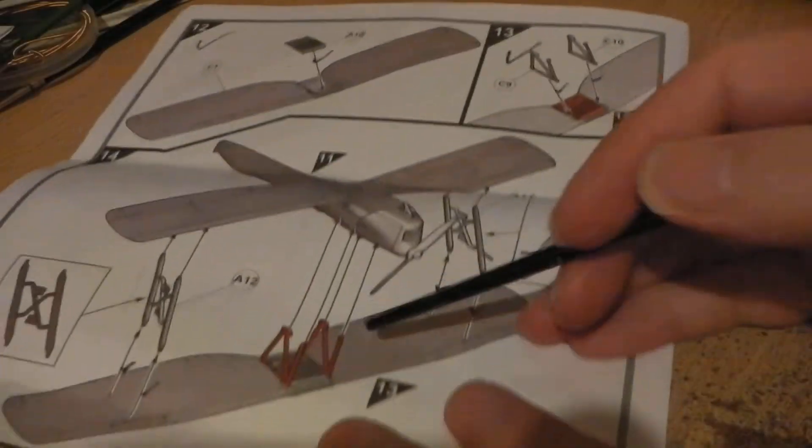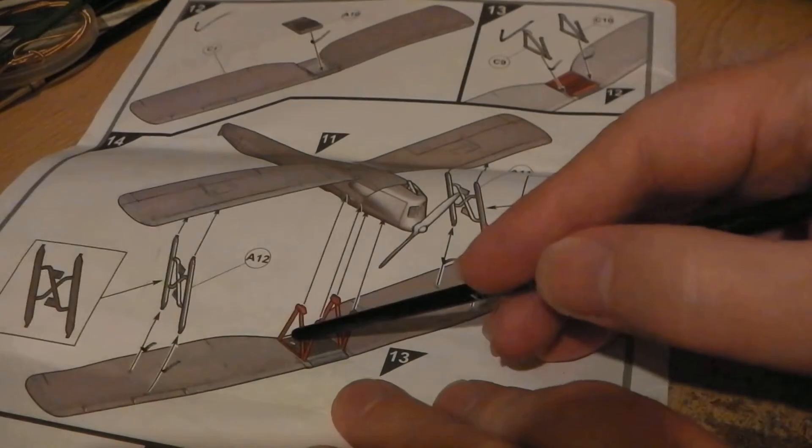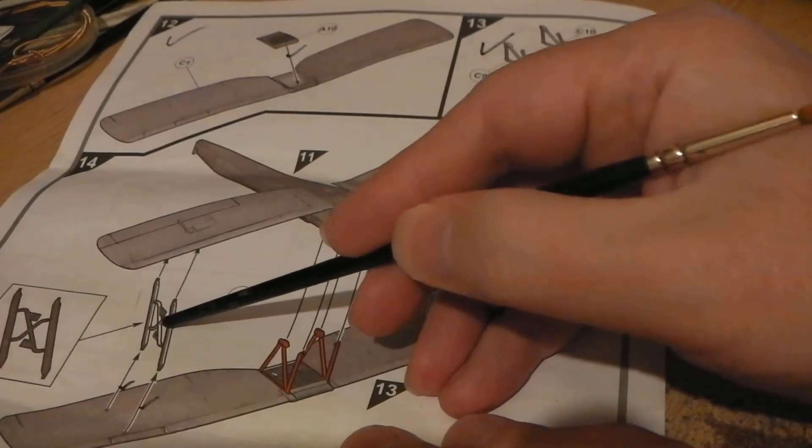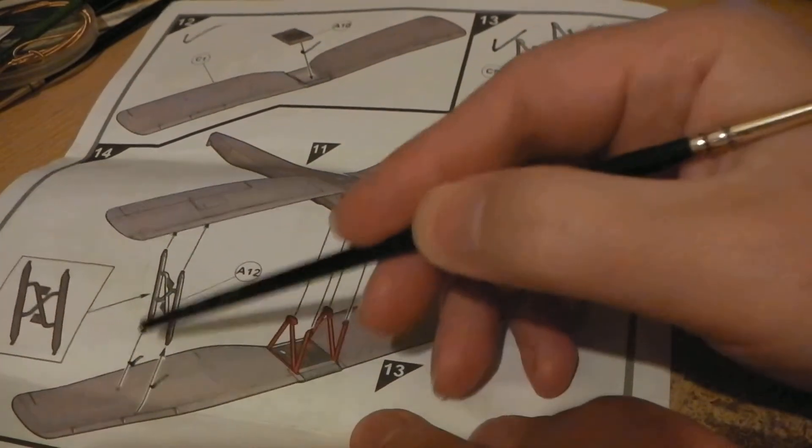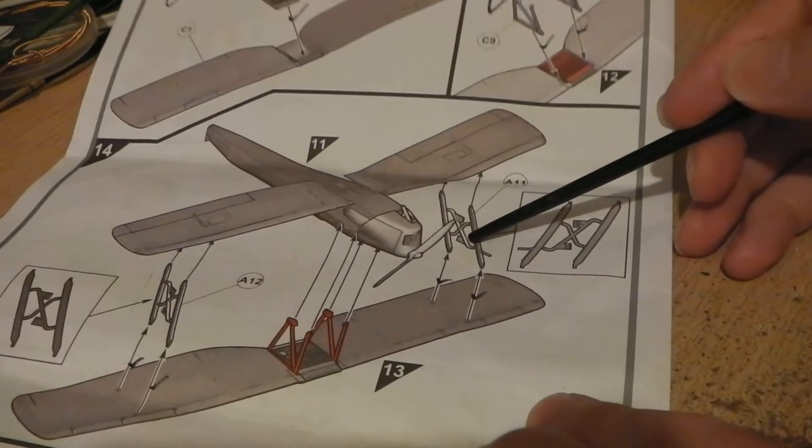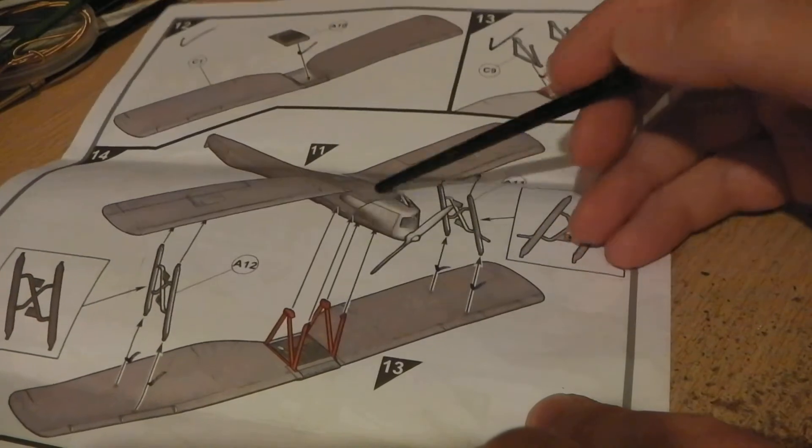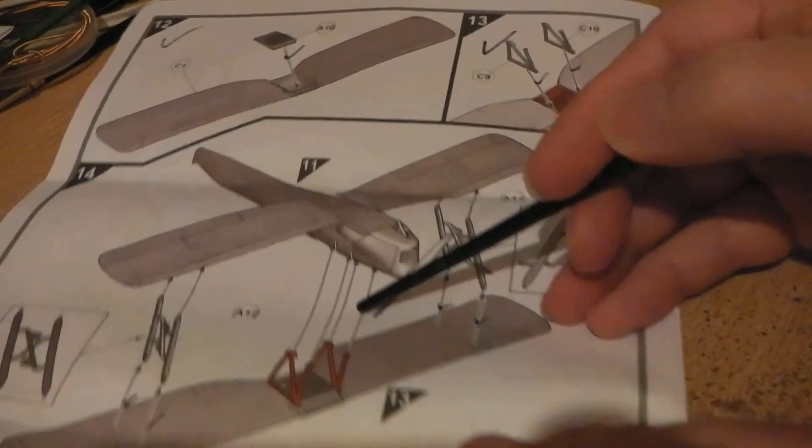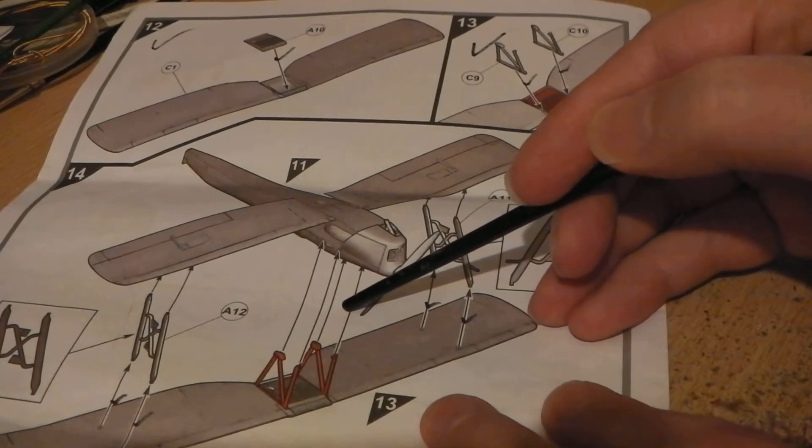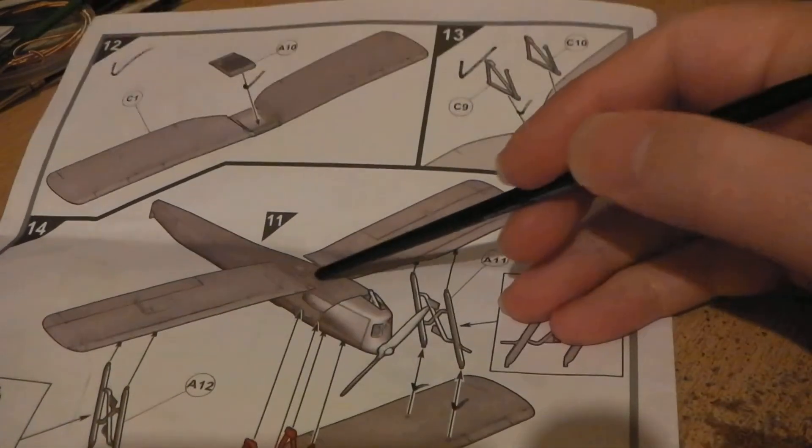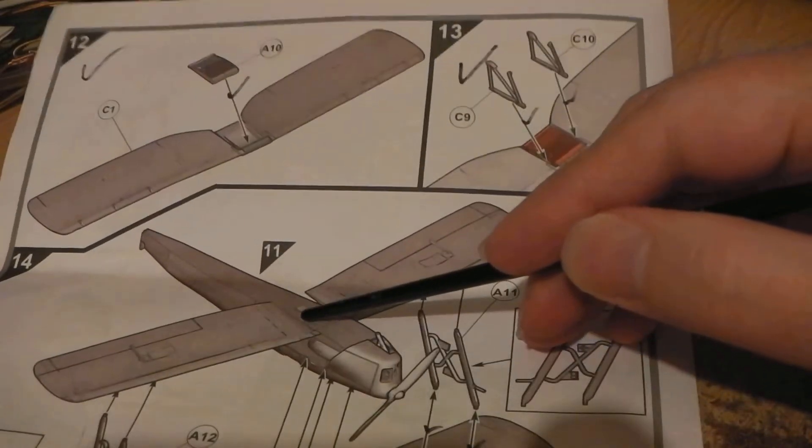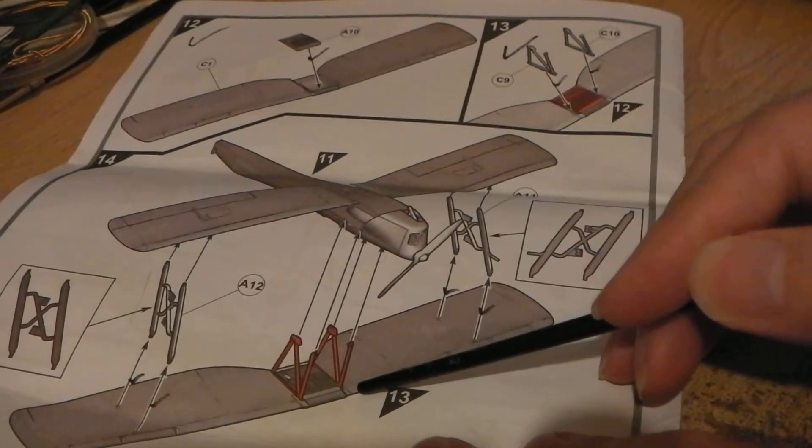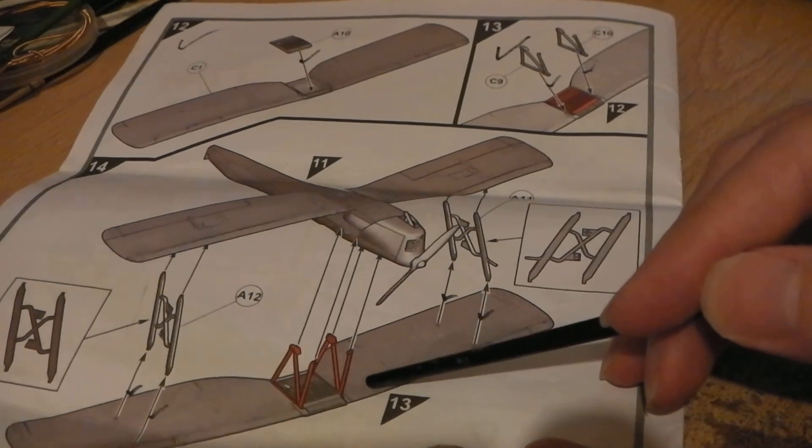So imagine you've got those on there first, and then you put those outer struts on there, and then you can put the fuselage on there, and then you've got quite an easy job to line up and fit the bottom wing with the fuselage on top wing, and I think it would go better together like that.